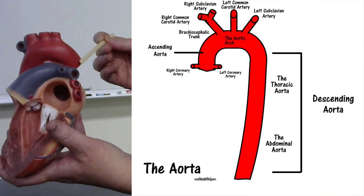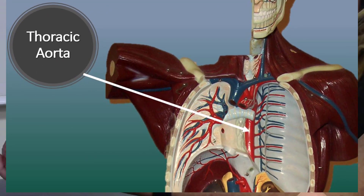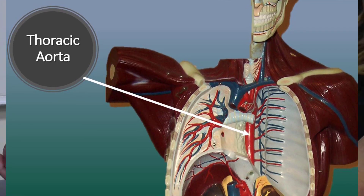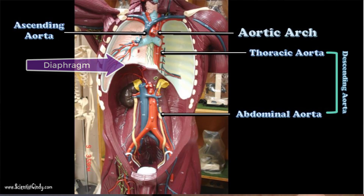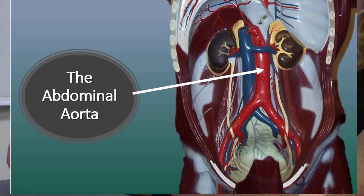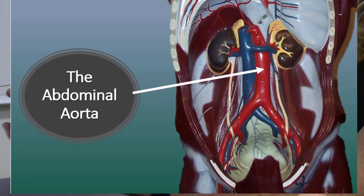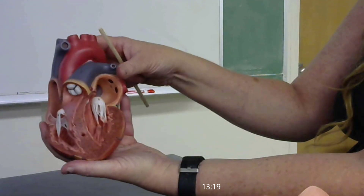The descending aorta is separated into two regions. The portion traveling through the thoracic cavity is the thoracic aorta. The thoracic aorta continues to descend and passes through the diaphragm into the abdominal pelvic cavity — at that point it becomes the abdominal aorta. The descending aorta sends oxygenated blood from the heart to the lower portions of the body, including portions of the torso.